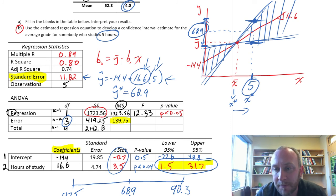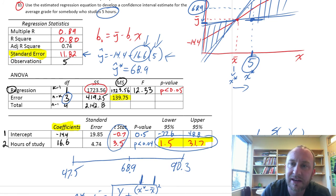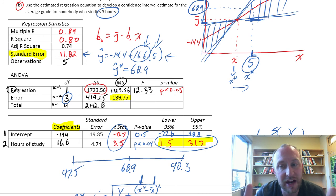We can also calculate our confidence interval estimate. So, here, for somebody who studies five hours a week, my point estimate is that they will earn a grade of 68.9%, on average.